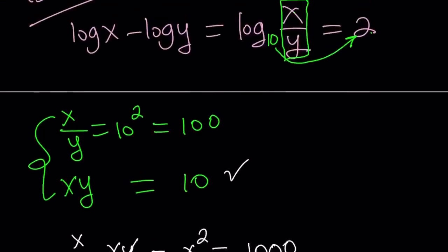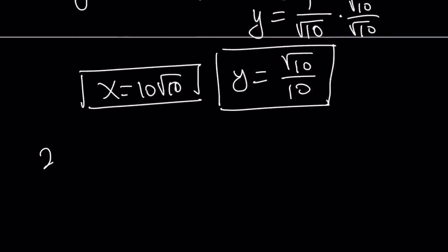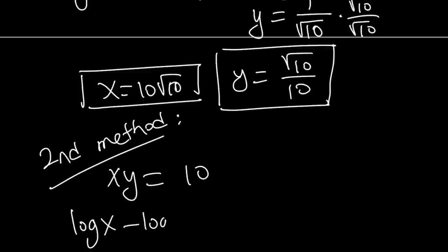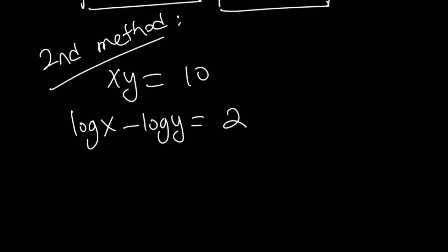So that's basically the first method. Now let's take a look at the second method. I'm going to rewrite the original problem: xy is 10, and log x minus log y is 2. For my second method, I'm going to log both sides of the first equation, because logging xy is going to turn it into a sum of two logs. And we already have the difference, so we can build a really nice system that can be eliminated.